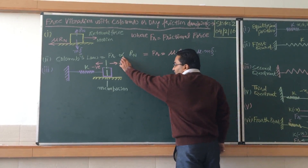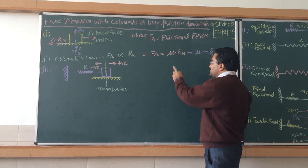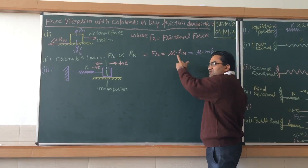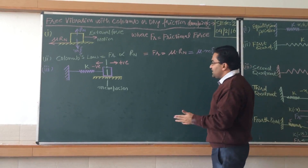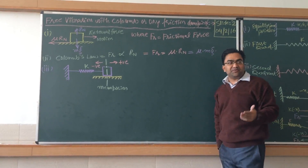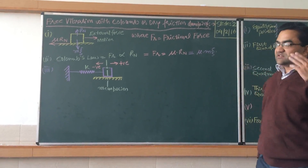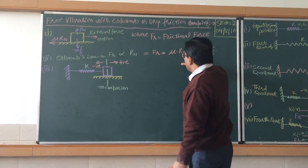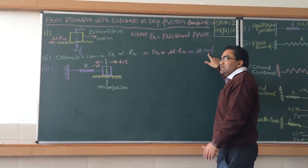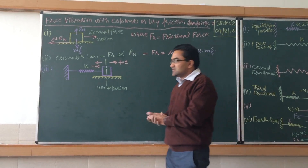The normal reaction gives the direct force. The proportionality symbol can be replaced by mu, where mu is the coefficient of friction and it depends upon the type of surface. So the friction force F equals mu times the normal reaction Rn, and Rn equals mg if the system is stable.